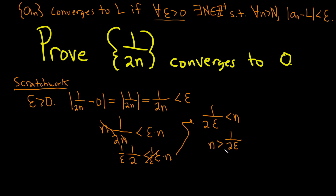Writing that backwards: n is bigger than 1 over 2 epsilon. So we need a capital N bigger than this. There's something called the Archimedean principle which says that whenever you have a number you can find a natural number bigger than it. So we'll choose a natural number bigger than 1 over 2 epsilon — that's our N.